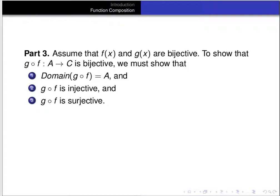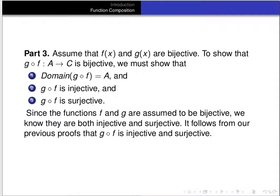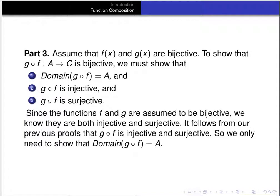For Part 3, assume f and g are bijective. To show the composition is bijective, we need the domain of g ∘ f to be A, g ∘ f to be injective, and g ∘ f to be surjective. We get two of those for free from the previous parts of the theorem — since f and g are bijective they're both injective and surjective, so g ∘ f is injective and surjective. We only need to show that the domain of g ∘ f is A.